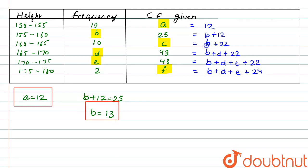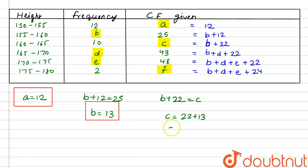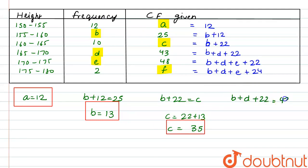This is B plus 22, not C plus 22. So we have B plus 22 equal to C. Since B is 13, C would be 22 plus 13, so C is equal to 35. Next, B plus D plus 22 equals 43. With B as 13, we get D plus 13 plus 22 equals 43, so D is equal to 43 minus 35, which gives D equal to 8.